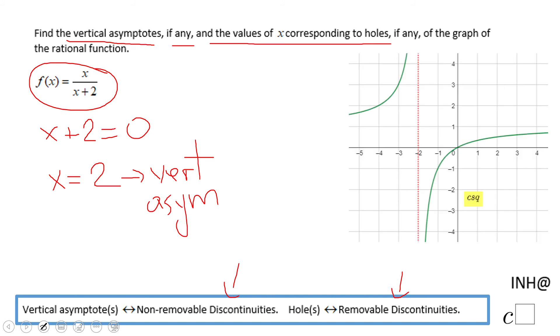If you look to the graph, I have the graph here. You'll notice when x is getting closer and closer to negative two, the graph here goes up, the graph here goes down. It's a non-removable discontinuity, it's a jump.